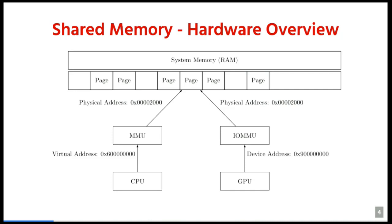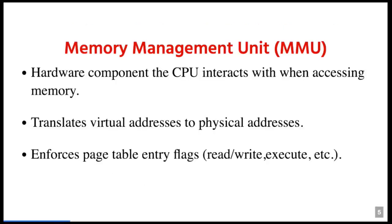As a quick overview of the hardware involved with shared memory, there are a couple of missing pieces, but this is basically what we need to cover for the actual vulnerability. The important thing to take away from these slides are these two devices called the MMU and IOMMU. These translate virtual addresses or device addresses to the physical address where the memory actually lies in system RAM. The bug exploits this setup.